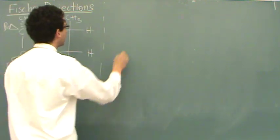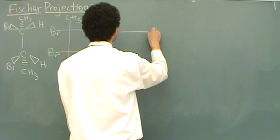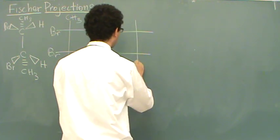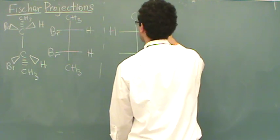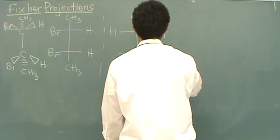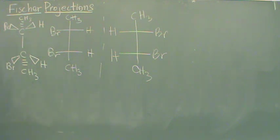So now, if I draw a mirror image, it's super easy. I don't have to draw all those wedges and dashes and all that stuff. I can just draw this.